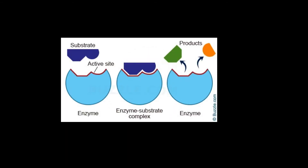You've probably heard the terms substrate, product, and active site before when learning about enzymes — but what do these terms mean? The substrate is the molecule the enzyme acts on. They bind together to form an enzyme-substrate complex. The product is what's produced by the chemical reaction.